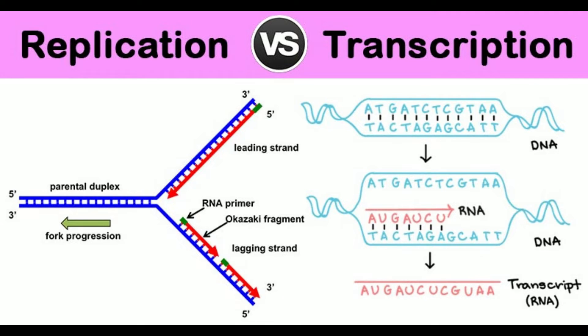7. Raw materials: dATP, dGTP, dTTP, and dCTP for DNA replication. ATP, UTP, GTP, and CTP serve as raw materials for transcription.